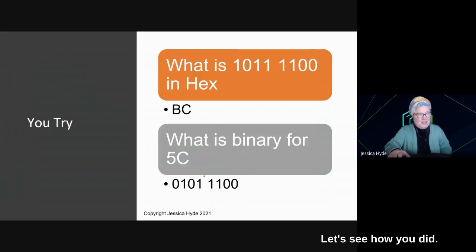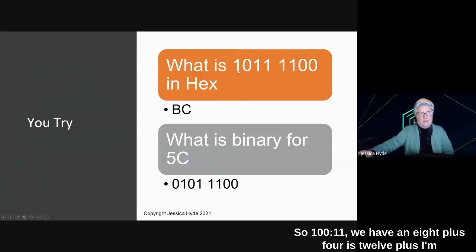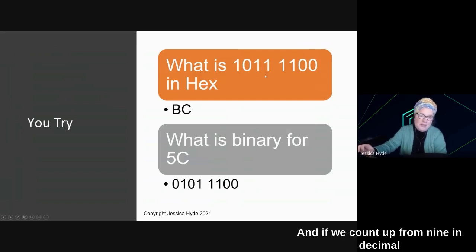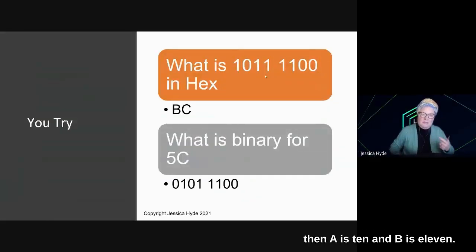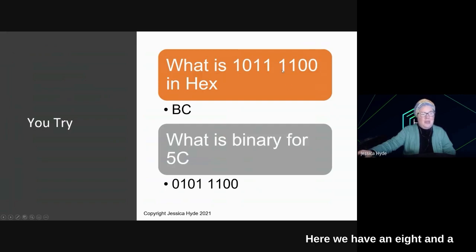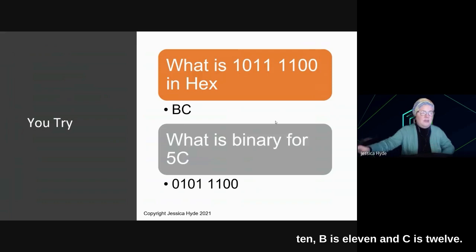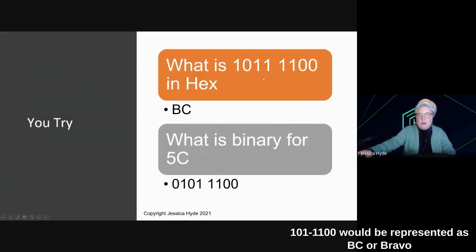Welcome back. Let's see how you did. So 1011, we have an 8 plus 2 is 10, plus 1 is 11. And if we count up from 9 in decimal, then A is 10 and B is 11. So 1011 would be represented as B, or Bravo. Here, we have an 8 and a 4 in our binary next nibble. So 8 plus 4 is 12. And again, if we count up in hexadecimal, A is 10, B is 11, and C is 12. So 1011, 1100 would be represented as B, C, or Bravo, Charlie, in hexadecimal.